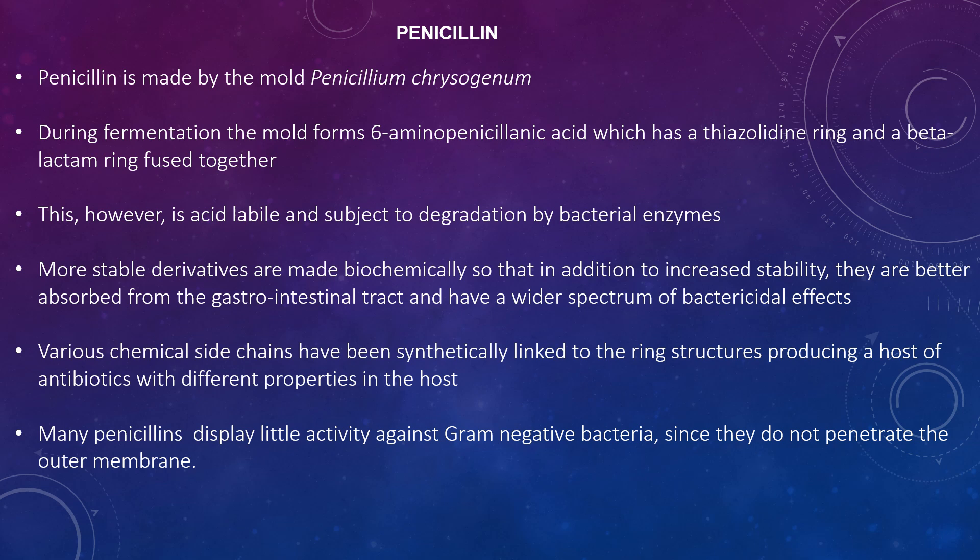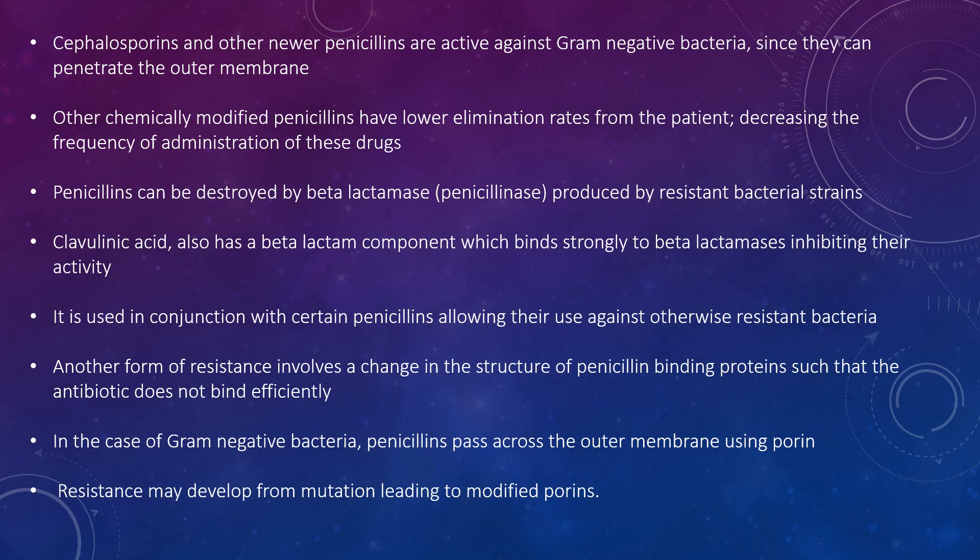Many penicillins display little activity against gram-negative bacteria since they do not penetrate the outer membrane. Sporins and other newer penicillins are active against gram-negative bacteria since they can penetrate the outer membrane. Other chemically modified penicillins have lower elimination rates from the patient, decreasing the frequency of administration.